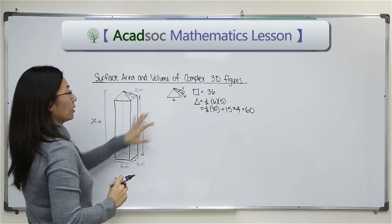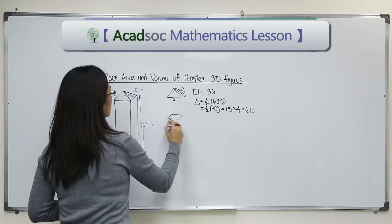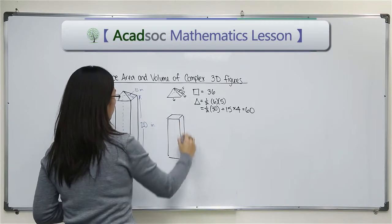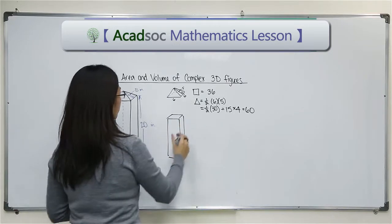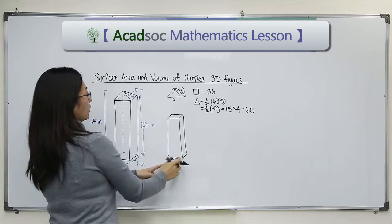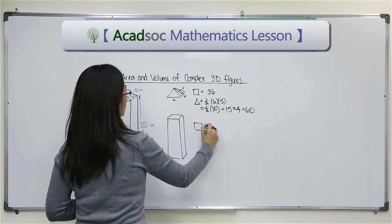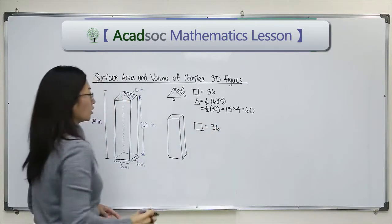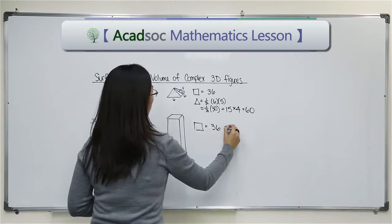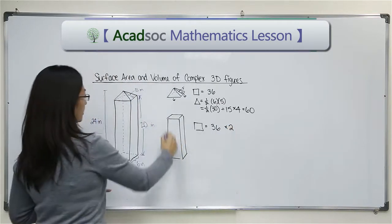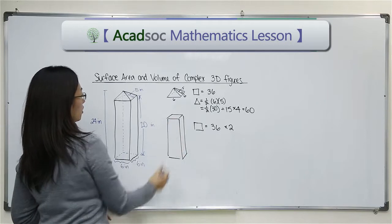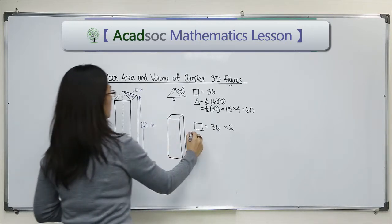So this is what we have from the pyramid. Now for the rectangular prism, I would have to find the area of the two bases. Those are square, six times six is 36, times it by two.